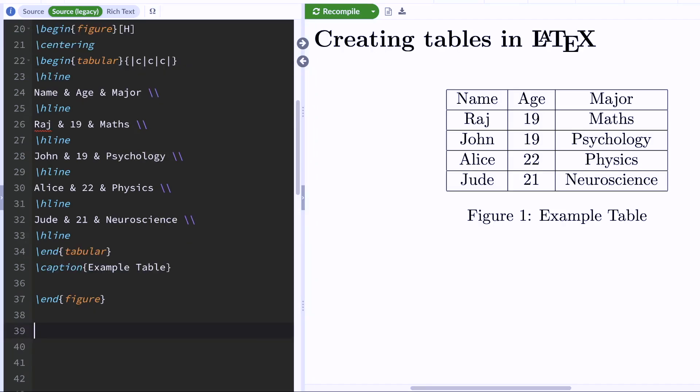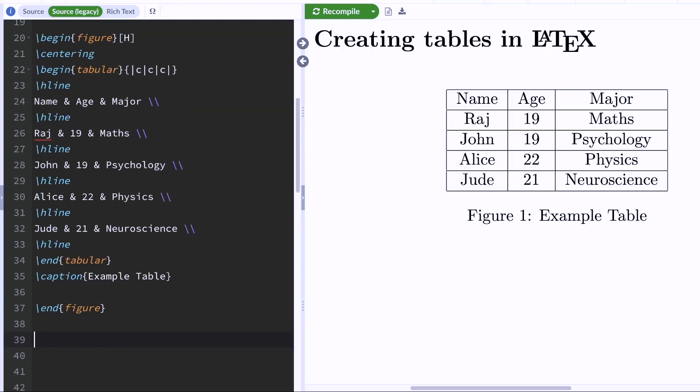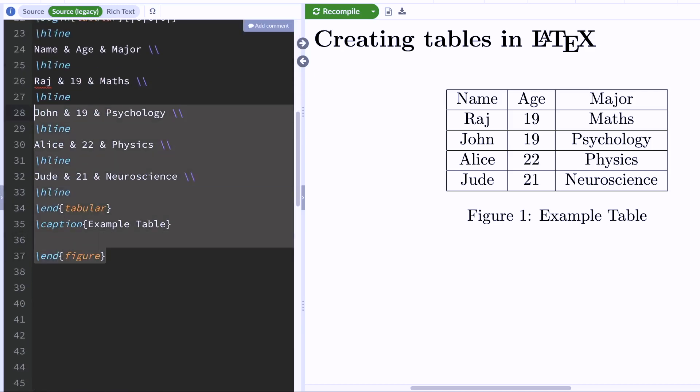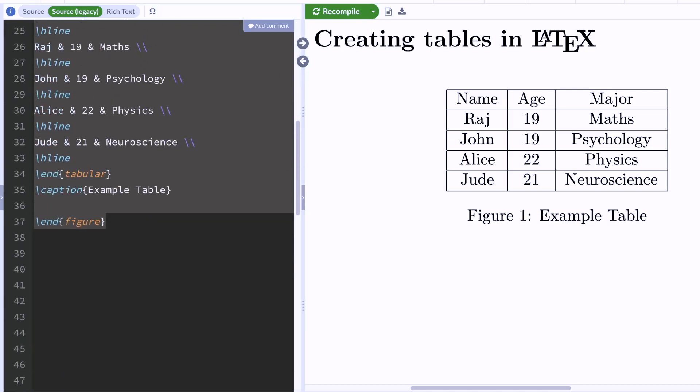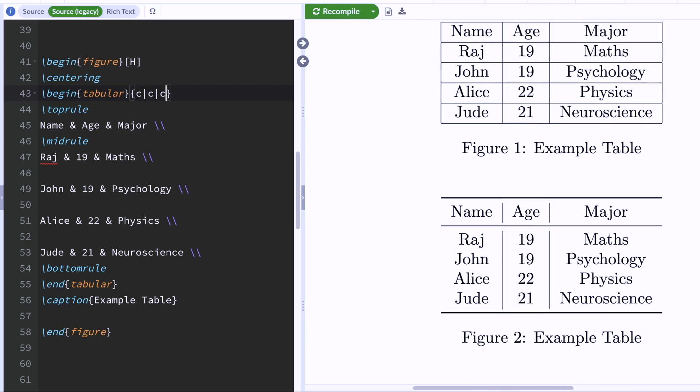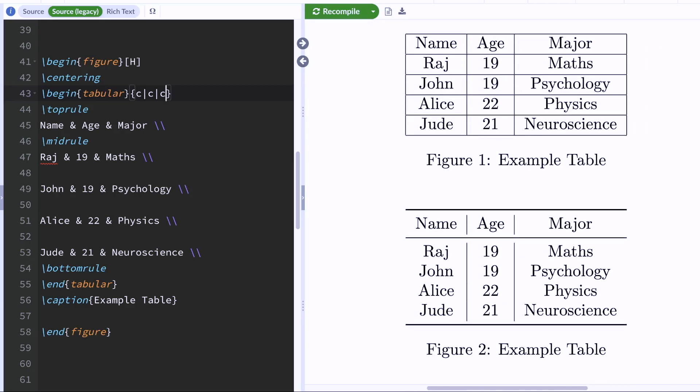Another popular package that people use is called the booktabs package. And you can use this package to make your tables look much better. So go ahead and add this package to the preamble of your document. And before using the booktabs package, I'm going to copy and paste my code so that you guys can see the before and after. Okay. So what I'm going to do is, I'm going to replace the first hline command by a new command called toprule, and the second hline command by a command called midrule, and the last hline command by a command called bottomrule. And I'm going to delete all of these other hline commands. And I'm also going to delete these pipe symbols right here. And when I hit compile, I should get a new prettier table. Yeah. So as you can see, this table does look arguably better than the first table. And you can create tables like these using the booktabs package.